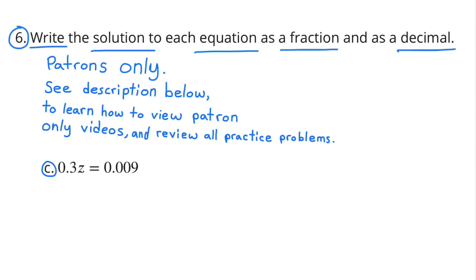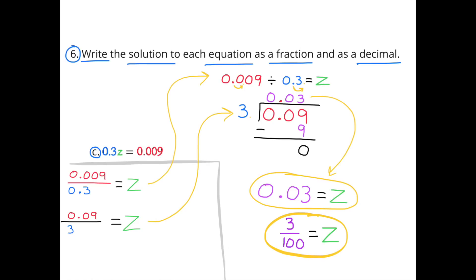C: 3 tenths z equals 9 thousandths. That can be rewritten as 9 thousandths divided by 3 tenths equals z, which is the same as 9 hundredths divided by 3, giving 3 hundredths. So z equals 3 hundredths. As a fraction, that's 3 over 100, and as a decimal, it's 0.03.